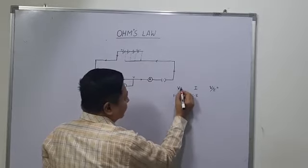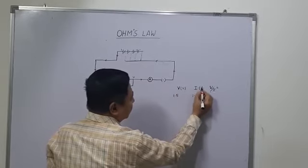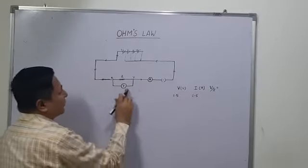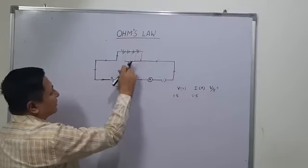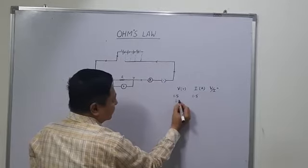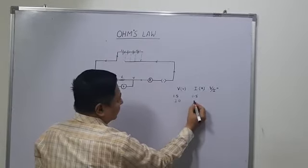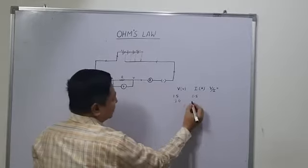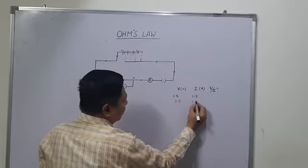This is in volts and this is in amperes. Now when we connect from this side, 2 cells are connected. The potential difference will be 3.0 volts and the current in the ammeter will be 1 ampere.